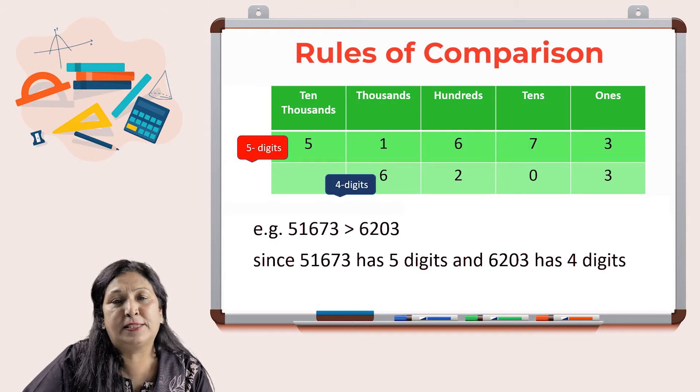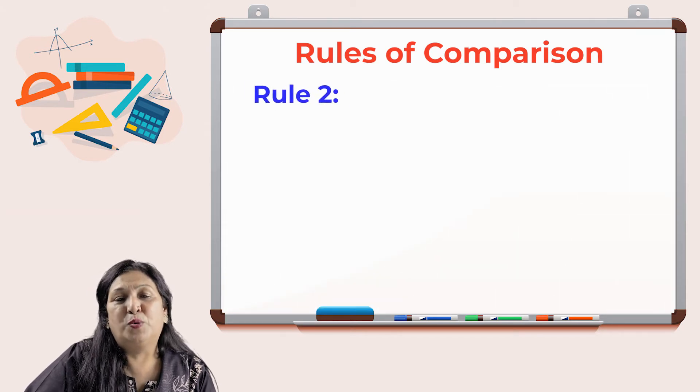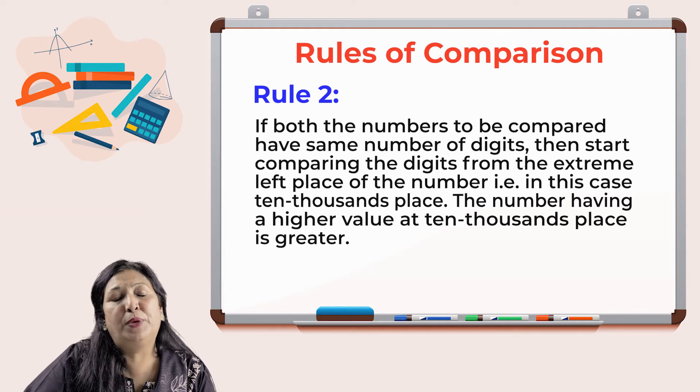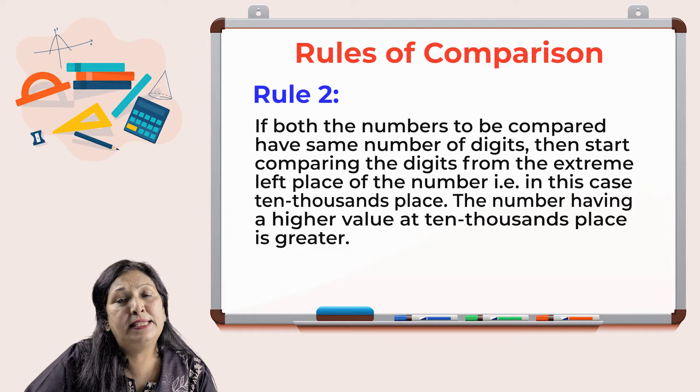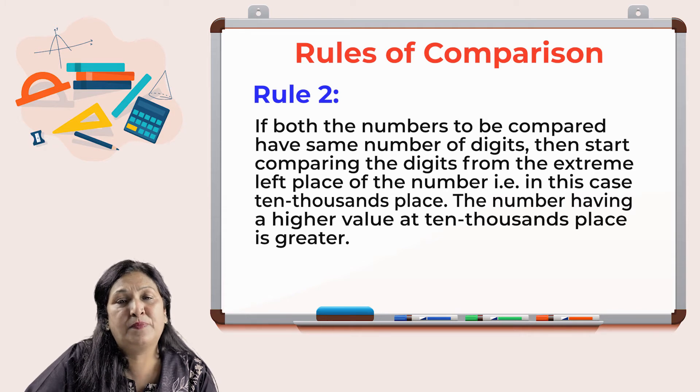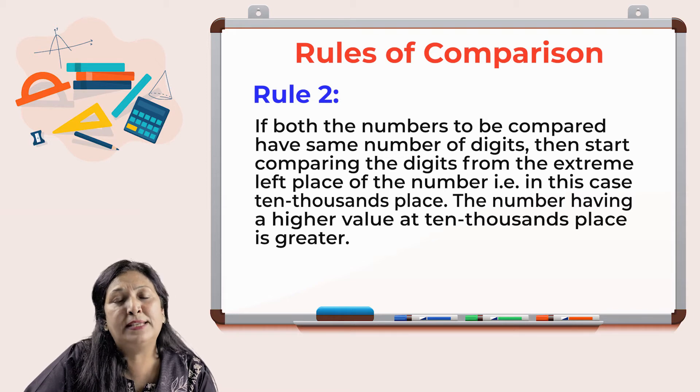Rule two: If both numbers to be compared have the same number of digits, then start comparing the digits from the extreme left place, that is at ten thousands place. The number with higher value at ten thousands place is greater.